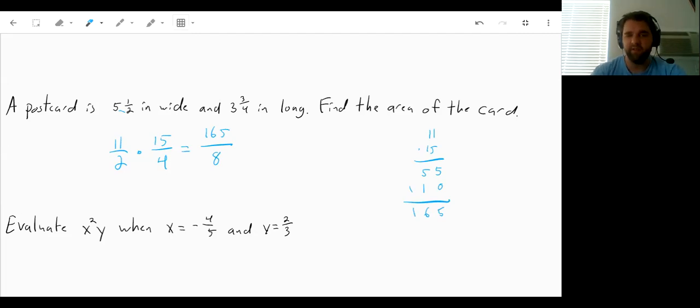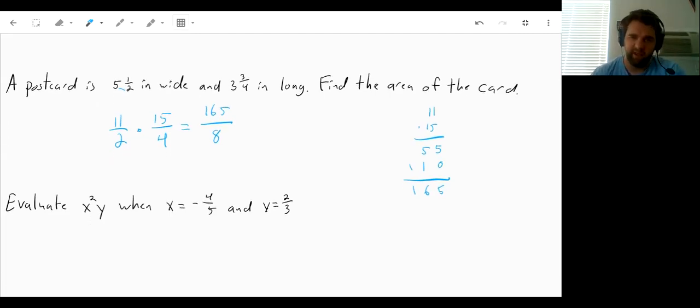So 165 over 2 times 4 is 8. And that's going to be our final answer in this case. It's 165 eighths.